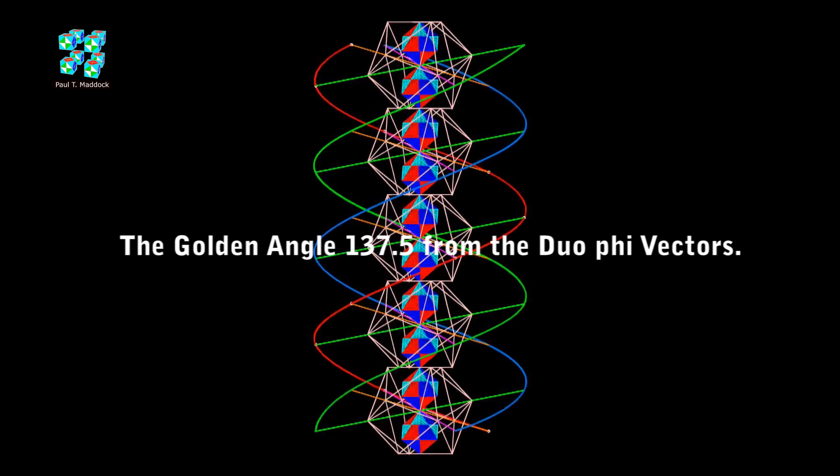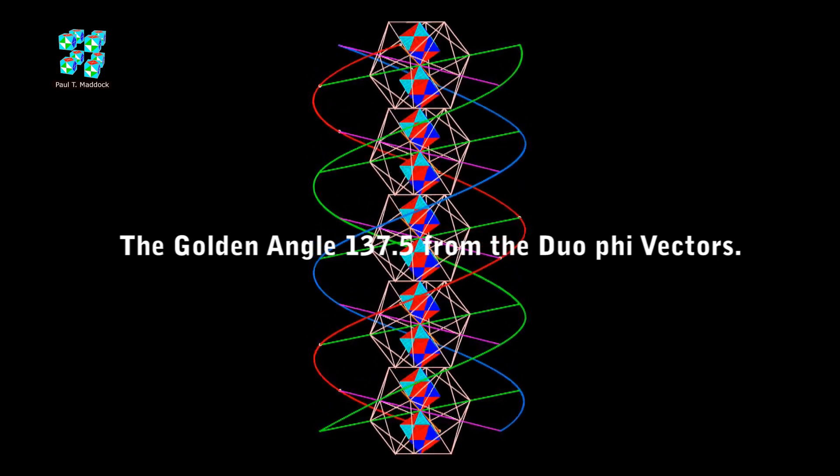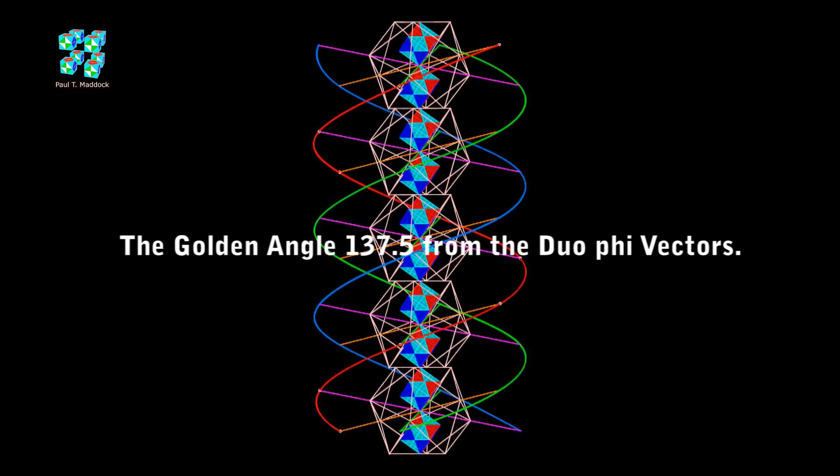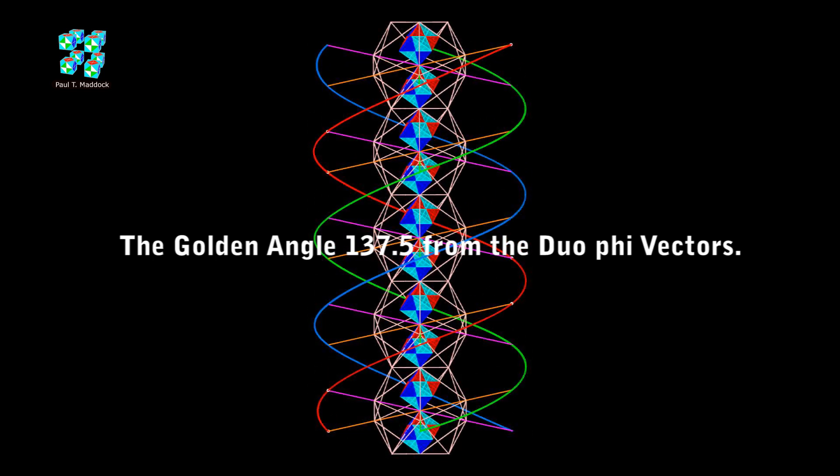So, what you're looking at is basically a duo 5 vector system. Now, in the geometry of plants, there is a very important angle, and this is the angle 137.5, a golden ratio angle.